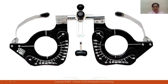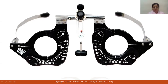This part is your nose bridge adjustment part. This part is your height — how much height is on the nose. In each trial frame, there are 4 chambers: this is 1, this is 2, 3, and behind it is 4.